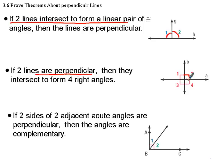And then finally, the third one, if two sides of two adjacent acute angles are perpendicular, then the angles are complementary. Those two angles, the measure of angle 1 plus the measure of angle 2 is going to equal 90 degrees.